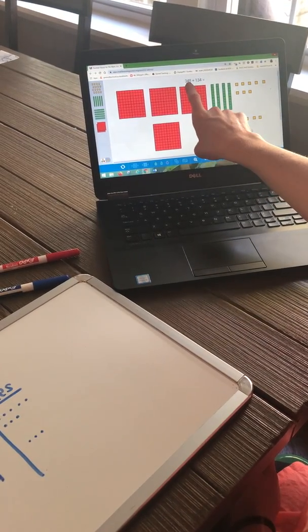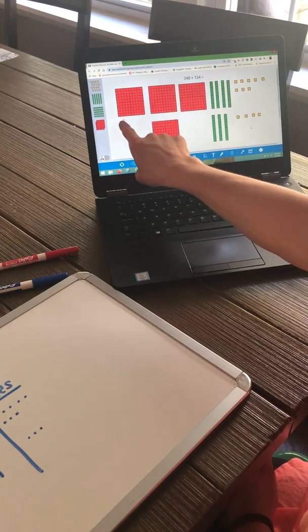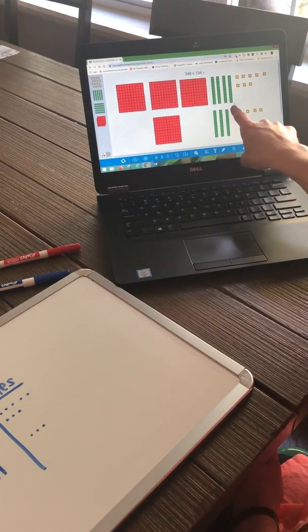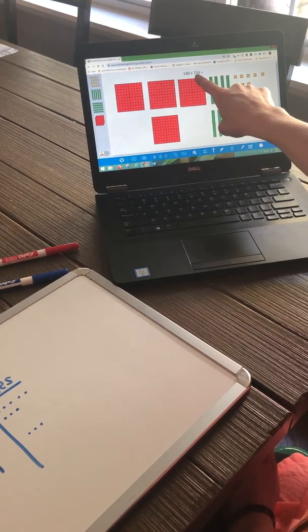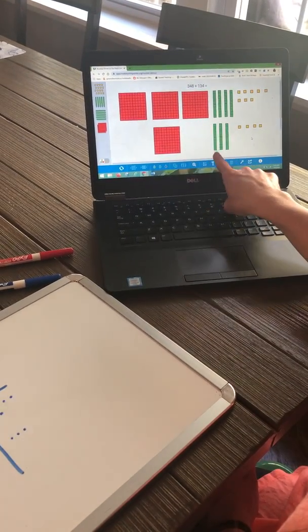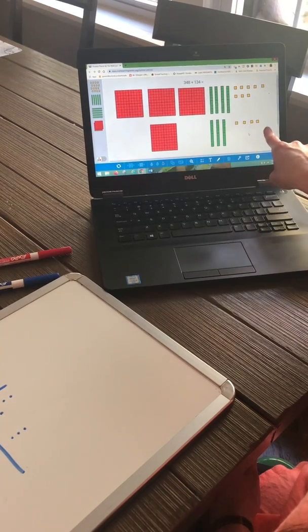So I start by representing each addend. 348 can be shown as 3 100s, 4 10s, and 8 1s. 134 can be shown as 1 100, 3 10s, and 4 1s.